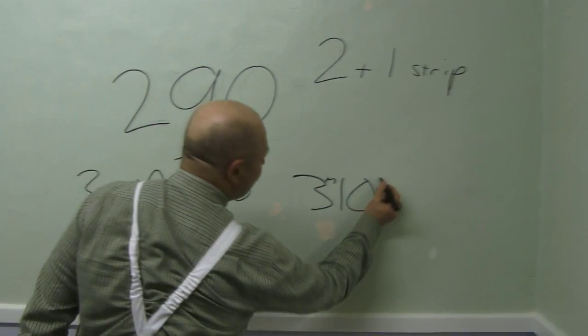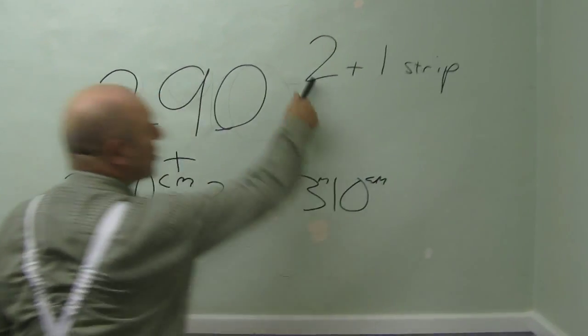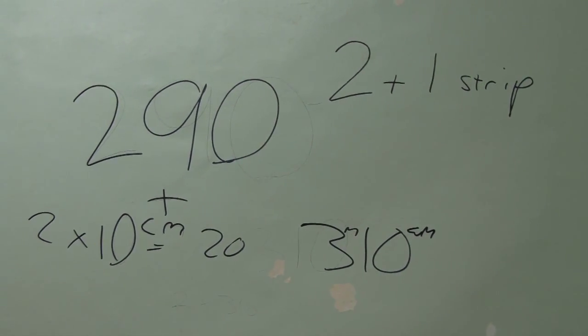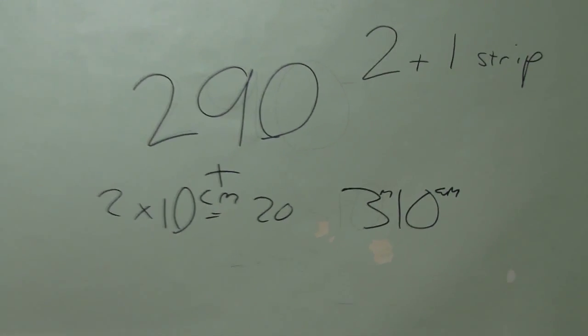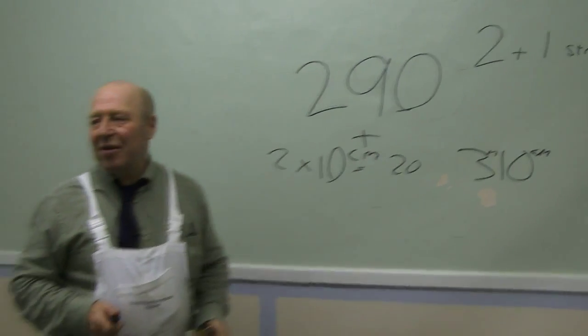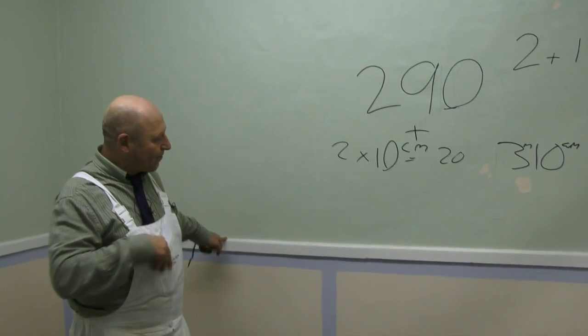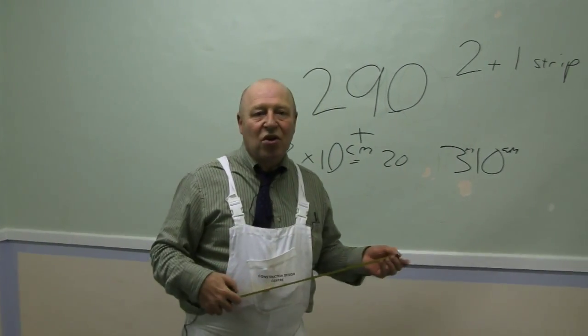So I've got 2 strips at 3 meters, 10 centimeters. Because I need a strip, I'm going to cut 3 lengths. So I'm going to cut 3 lengths at 3 meters, 10 centimeters. And we're going to go down to this dado rail. So we'll now go back to the board.